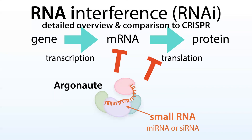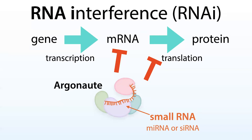RNA interference, or RNAi, is a really cool regulatory mechanism that organisms use to control the levels of proteins in a sequence-specific manner. It does this by regulating the level of messenger RNAs and the translation from those messenger RNAs.